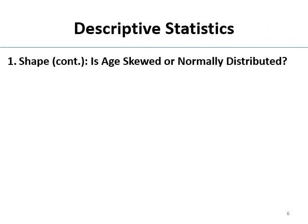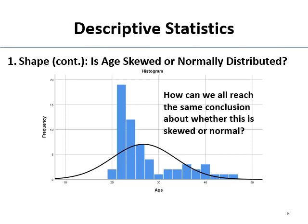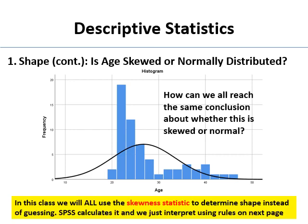So is age skewed or normally distributed? That's the first thing we want to know — the shape. This is the way we used to do things in class: do a histogram with a normal curve superimposed and kind of guess. This kind of looks like it has a tail to the right — it looks positively skewed. But how are we supposed to reach the same conclusion fairly? In this class, I don't make you guess at looking at pictures. We use something called the skewness statistic. You can get it in frequencies and a couple of other places. SPSS calculates it, and you basically use a rule to tell whether your distribution is skewed or not.